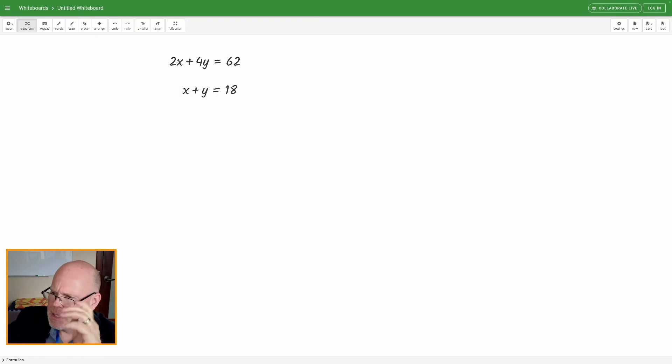Now here's our system. We've got these two equations, 2x plus 4y is equal to 62, x plus y is equal to 18. So now, first thing we're going to want to do, I want to leave this as it is, so I'm going to make a quick copy of each of these and there you go. And if I need to move them around, I can move them around a little bit.